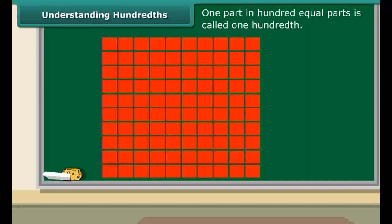One part in one hundred equal parts is called 1/100. Each small square is called 1/100 of the whole square. In decimal notation we read it as 0.01.